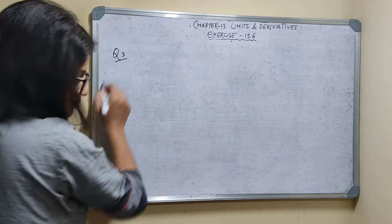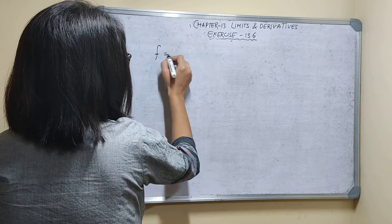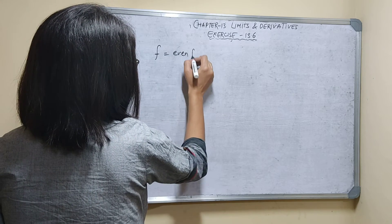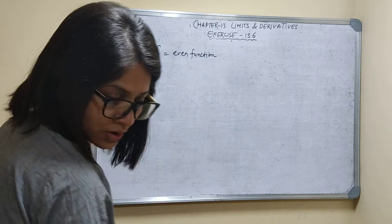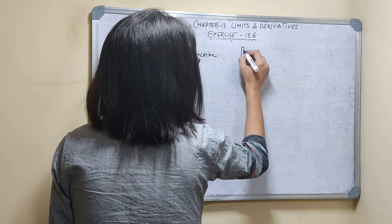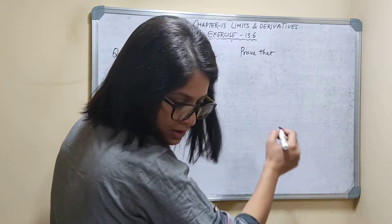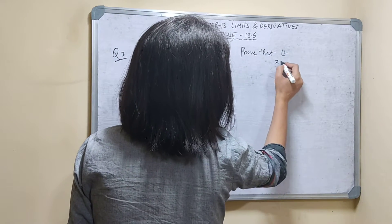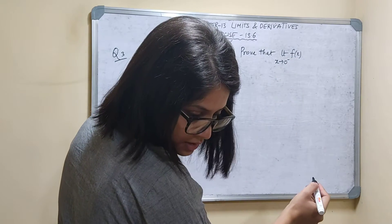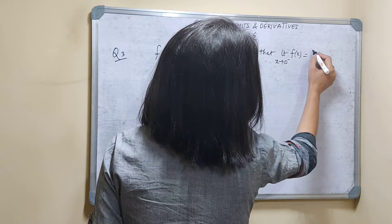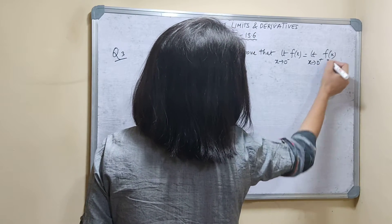Question number three: if f is an even function, prove that the limit as x tends to 0 minus of f(x) is equal to the limit as x tends to 0 plus of f(x). You have to prove this.